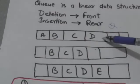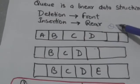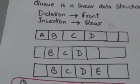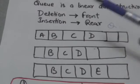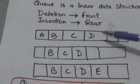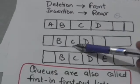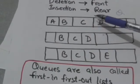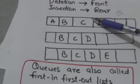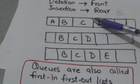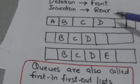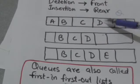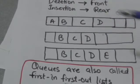Suppose there is a queue having four elements A, B, C, and D. A is the front element of the queue and D is the rear element of the queue.